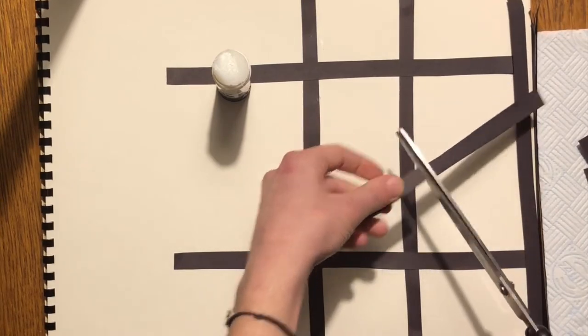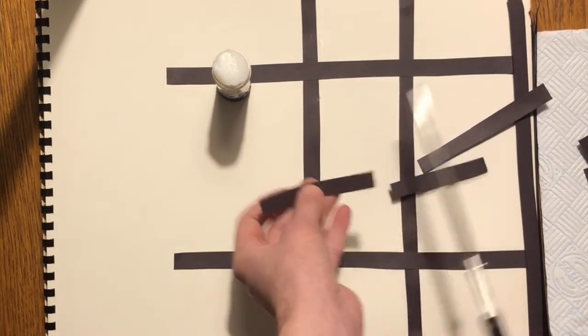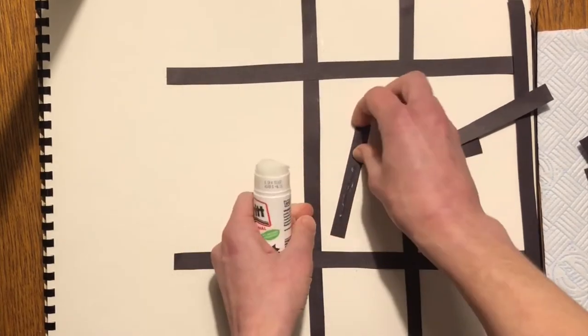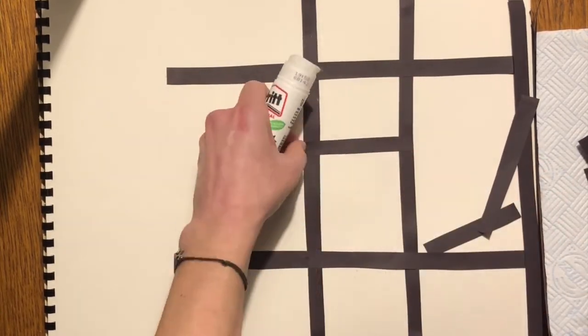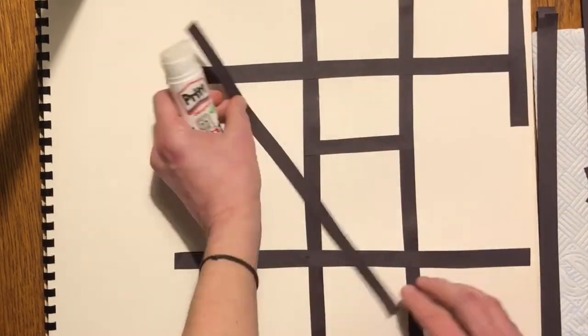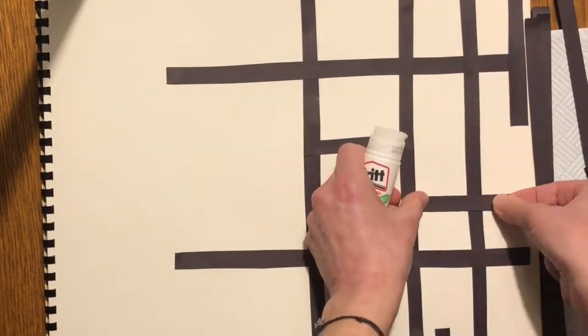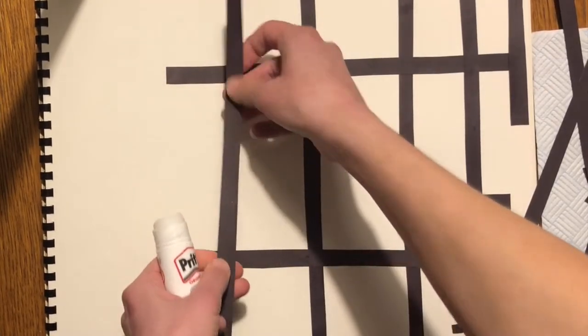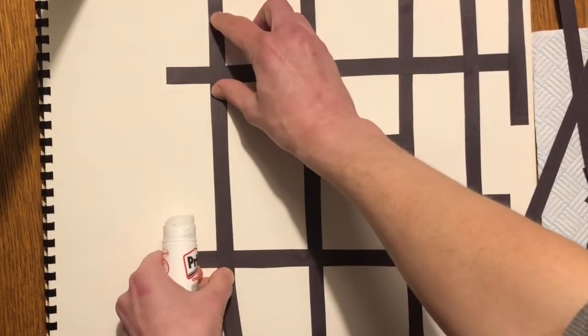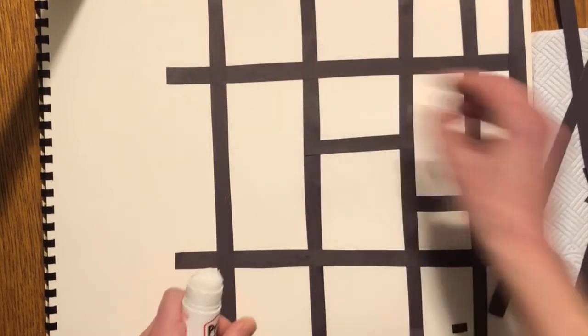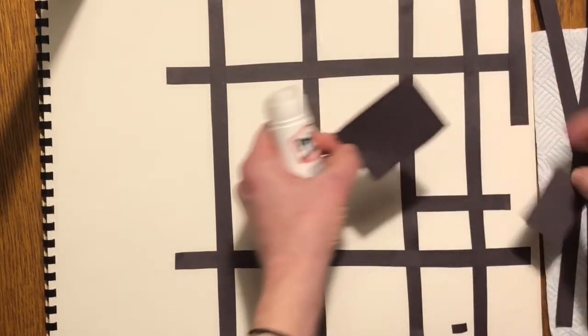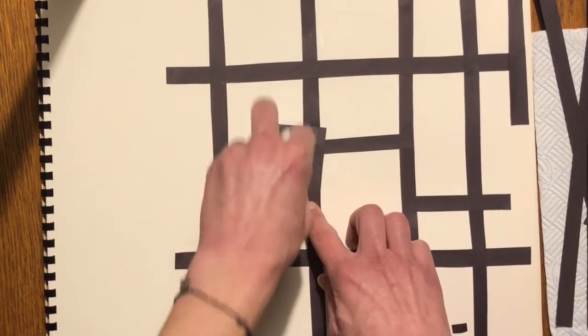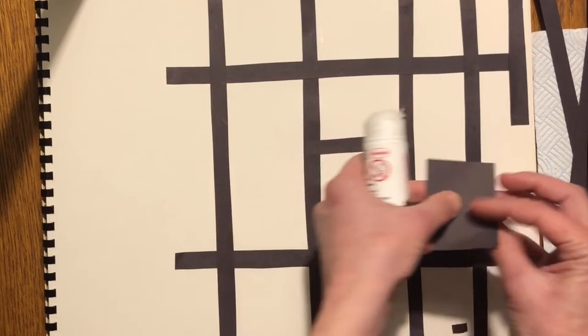Cut some strips of different sizes. I'm going to stick some black squares down too. Let's do it.